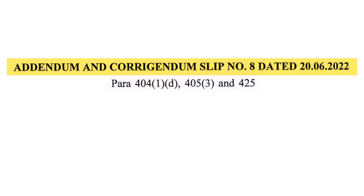Let's first discuss ACS 8 and then we will discuss ACS 9. The affected paras by ACS 8 are para 401(D), 405(3) and para 425. However, para 404(1) sub-para D and para 405 sub-para 3 are again revised by ACS 10, which we will discuss in the next video.